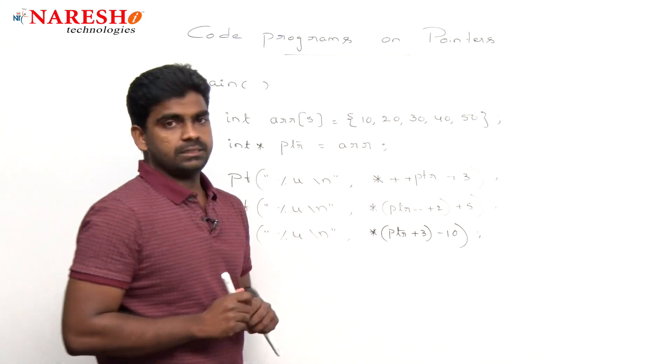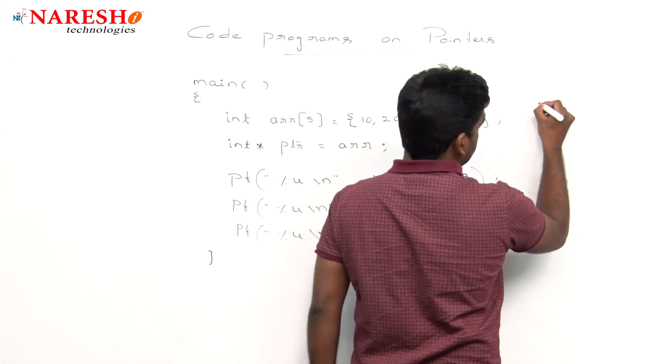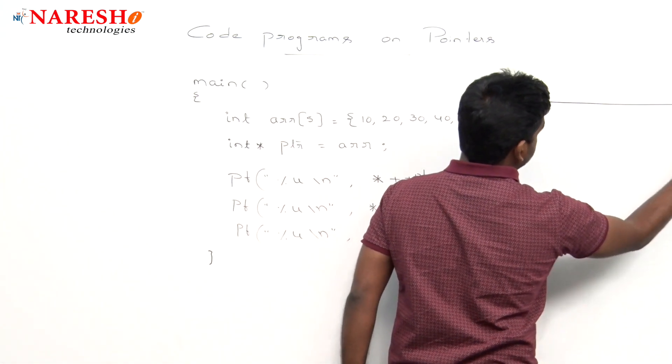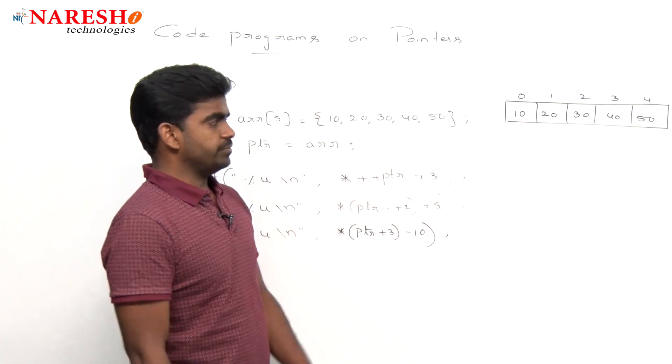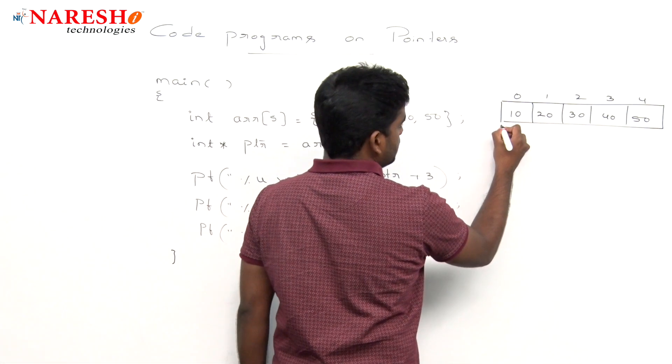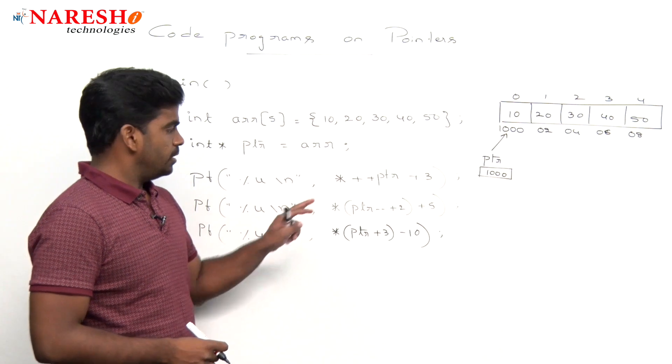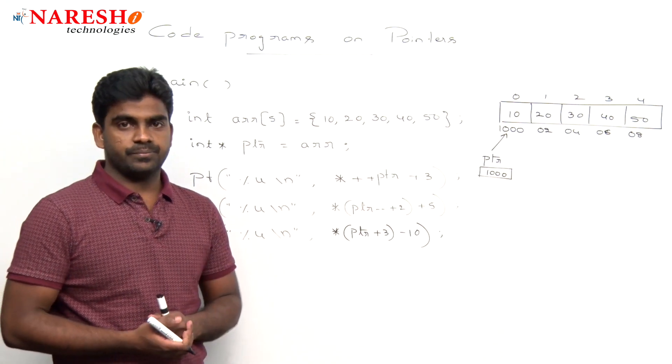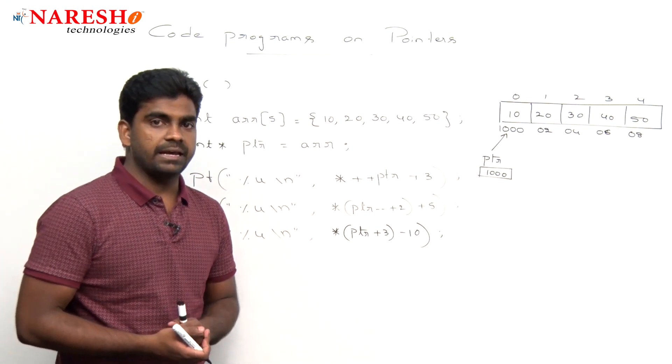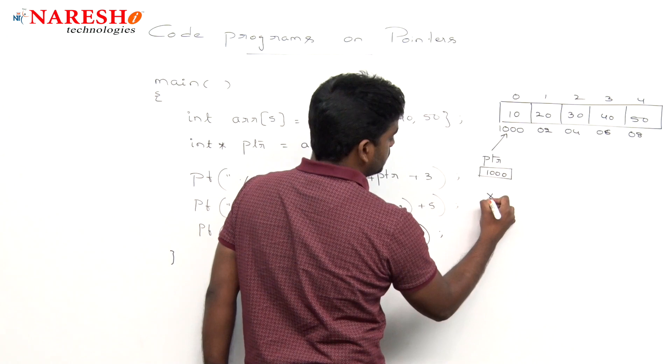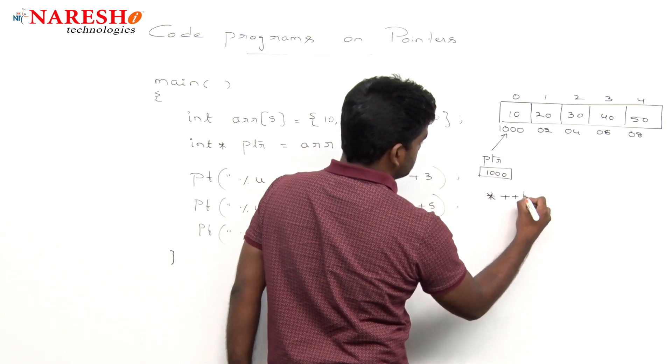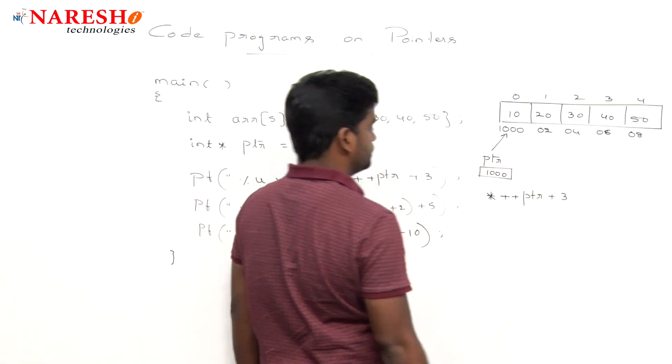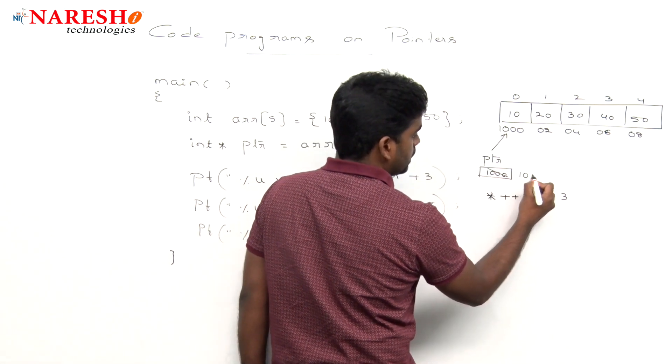First memory allocation for this, it gets memory in five locations like 10, 20, 30, 40, 50. And the base address is very important while working with such type of things. Suppose here the base address starts with 1000, 1002, 1004, 1006, 1008.